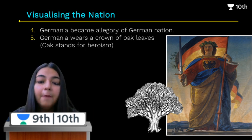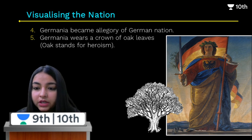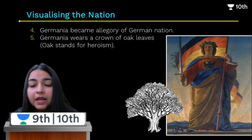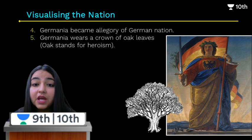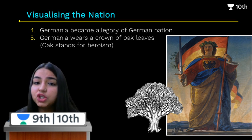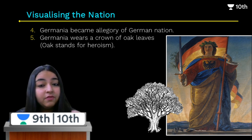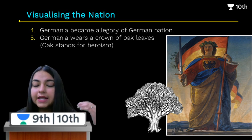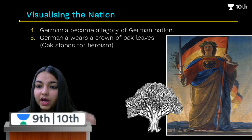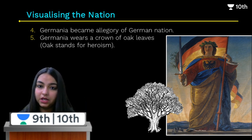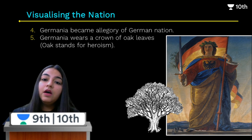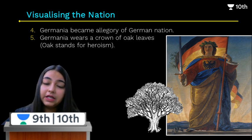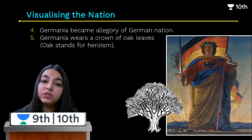Looking at the picture of Germania very carefully — in one hand she holds a sword, which represents strength and power, showing that if anyone tries to harm the nation, they will stand united. She also wears a crown of oak leaves, because oak leaves symbolize heroism. So Germania symbolizes heroism. This is how the artists of the 19th century used female allegories to represent nations.